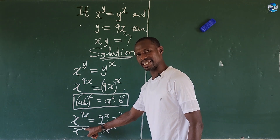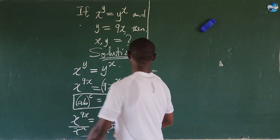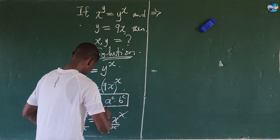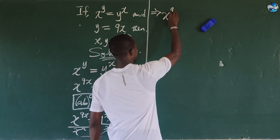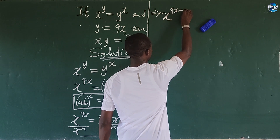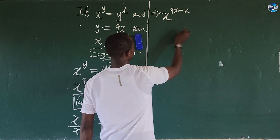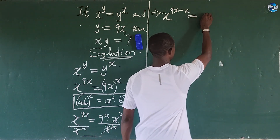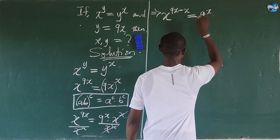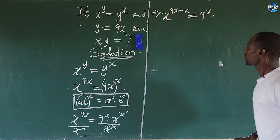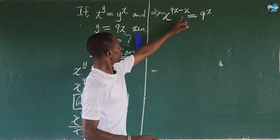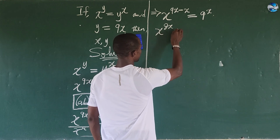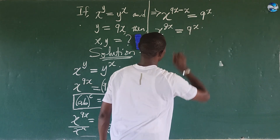The exponent on the left is 9x and the exponent we are dividing by is x. So this gives us x to the power of 9x minus x, which equals 9 to the power of x on the right-hand side. Subtracting, we get x to the power of 8x equal to 9 to the power of x.